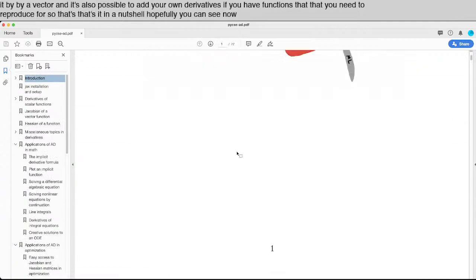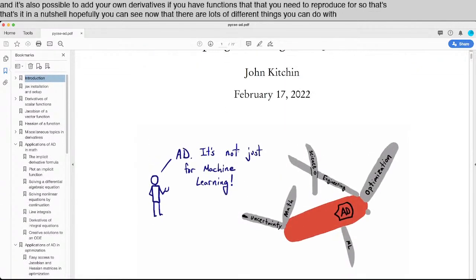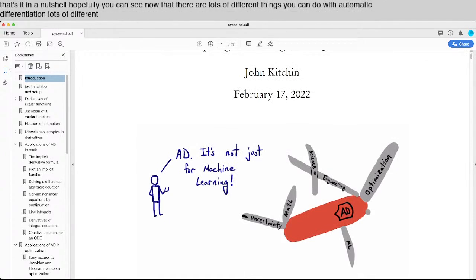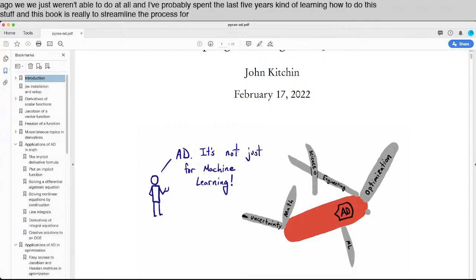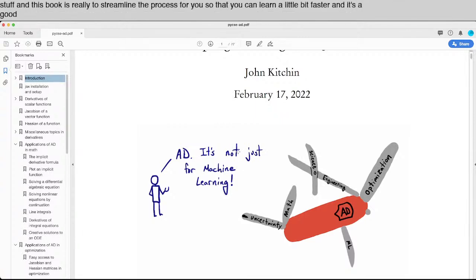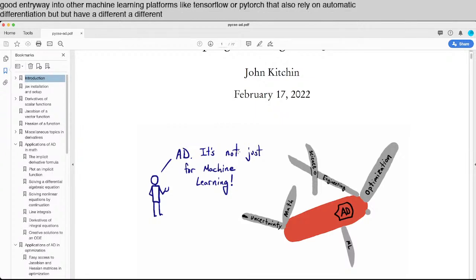Hopefully, you can see now that there are lots of different things you can do with automatic differentiation and lots of different applications, lots of ways to think about writing programs that 10 years ago we just weren't able to do at all. And I've probably spent the last five years kind of learning how to do this stuff. And this book is really to streamline that process for you so that you can learn a little bit faster. And it's a good entryway into other machine learning platforms like TensorFlow or PyTorch that also rely on automatic differentiation, but have a different way of working than JAX does.